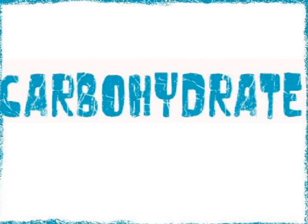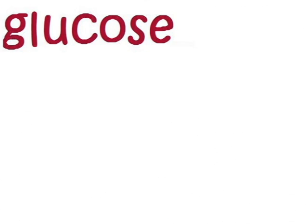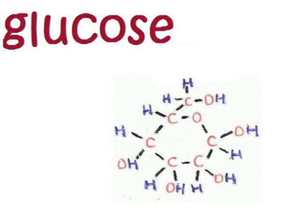Carbohydrates. A few food examples include chocolate, fruit, and pasta. A chemical example is glucose. Its structural representation is shown.